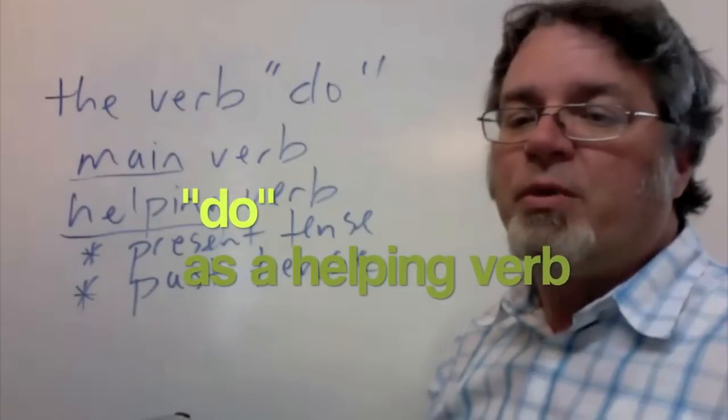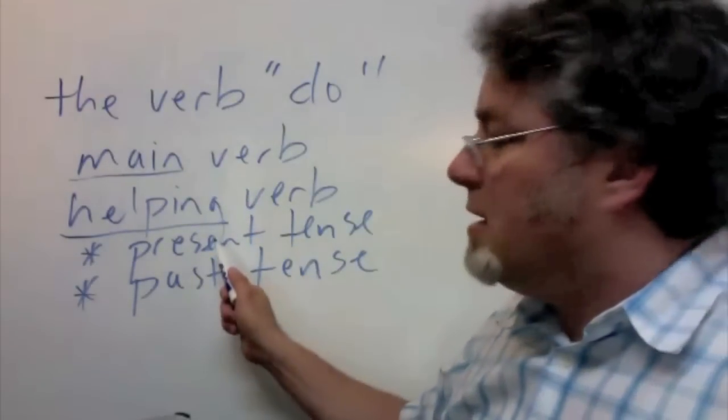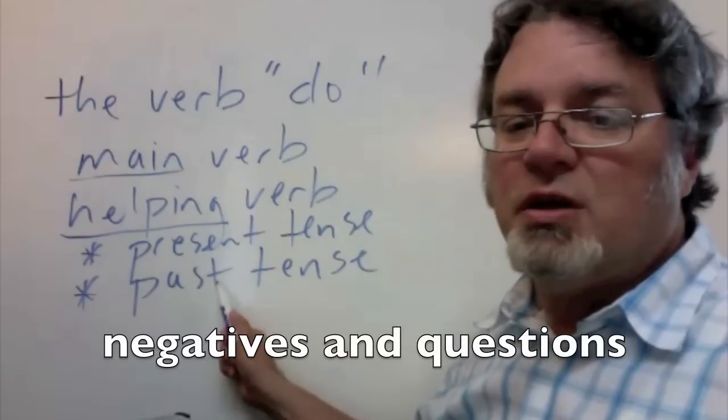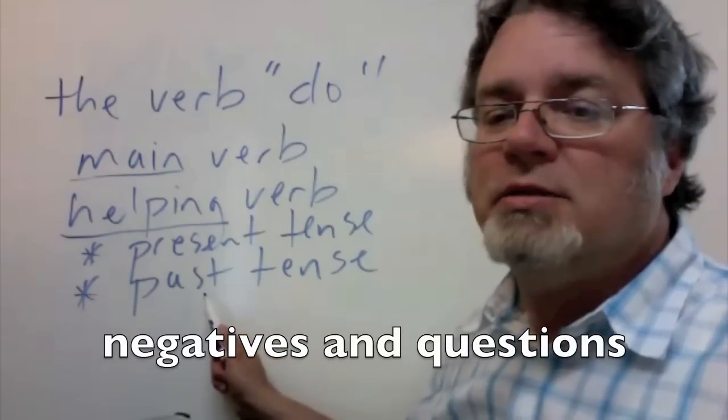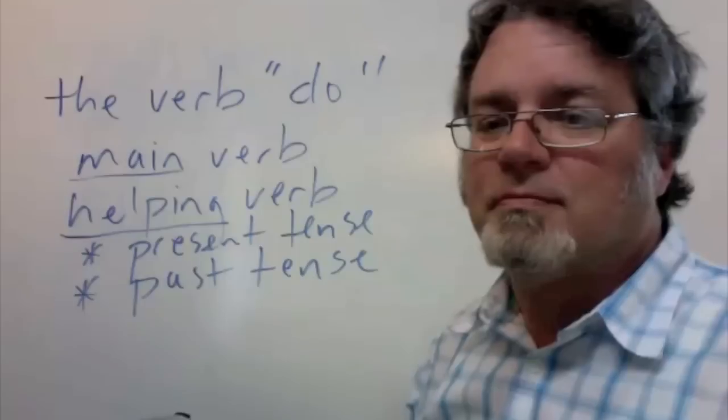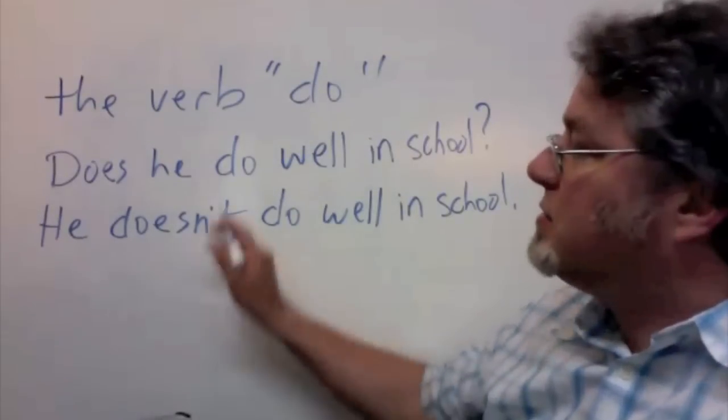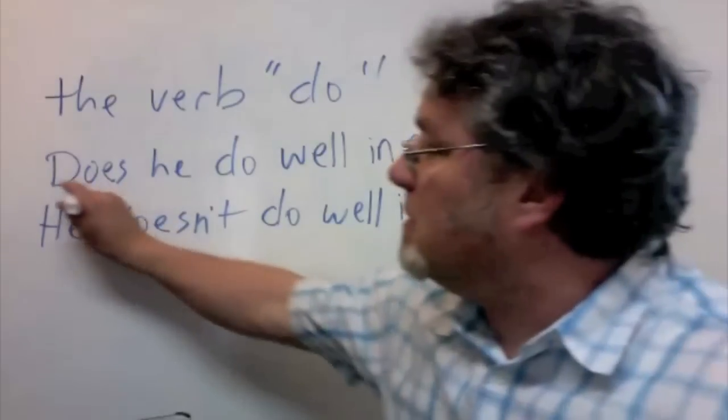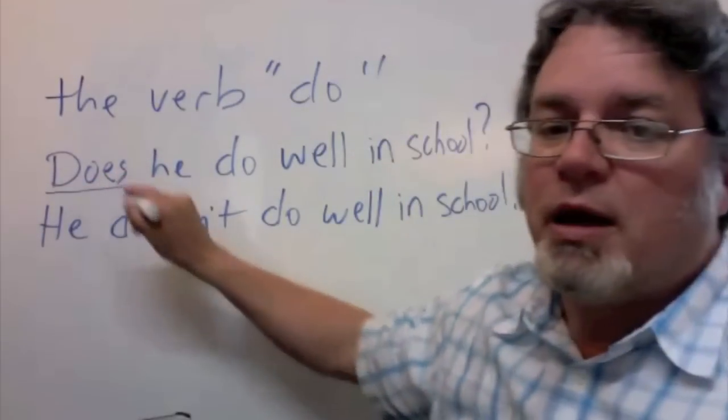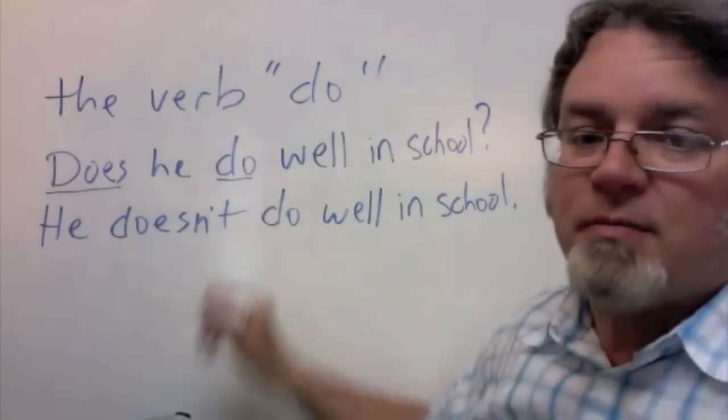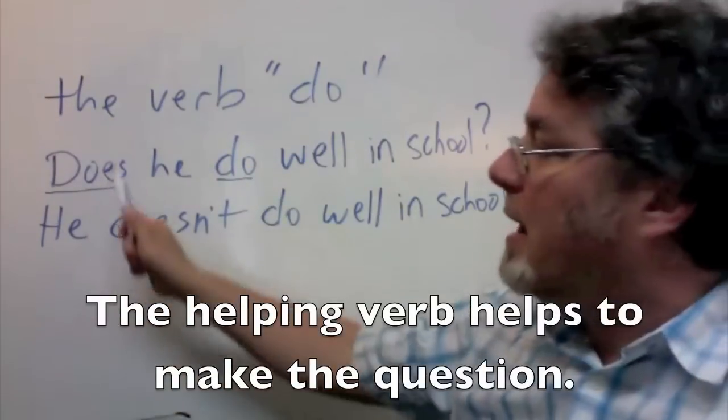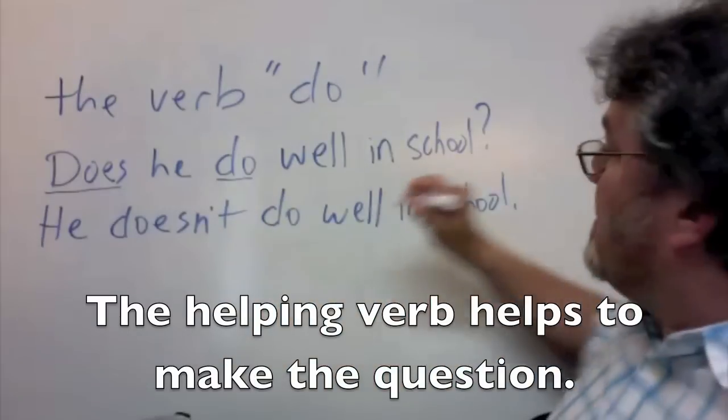As a helping verb, the verb do is used to make negatives and questions in the present tense and the past tense. Does he do well in school? In this question, this verb is the helping verb, and this is the main verb. The helping verb helps to make the question.